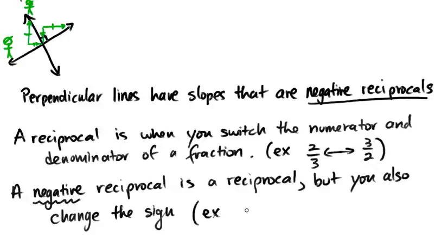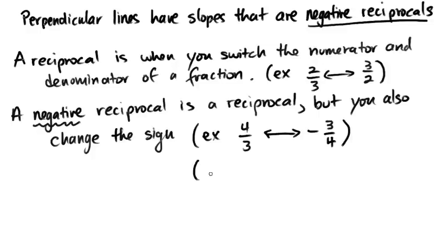For example, if you start with 4 thirds, the reciprocal is 3 quarters, and the negative reciprocal is negative 3 quarters. That relates back to slopes — one is positive and the other is negative. If you started with negative 3 quarters, you'd flip it to 4 over 3 and switch the sign to positive. For negative 8, imagine it as negative 8 over 1; the reciprocal is 1 over negative 8, and switching the sign gives positive 1 eighth.